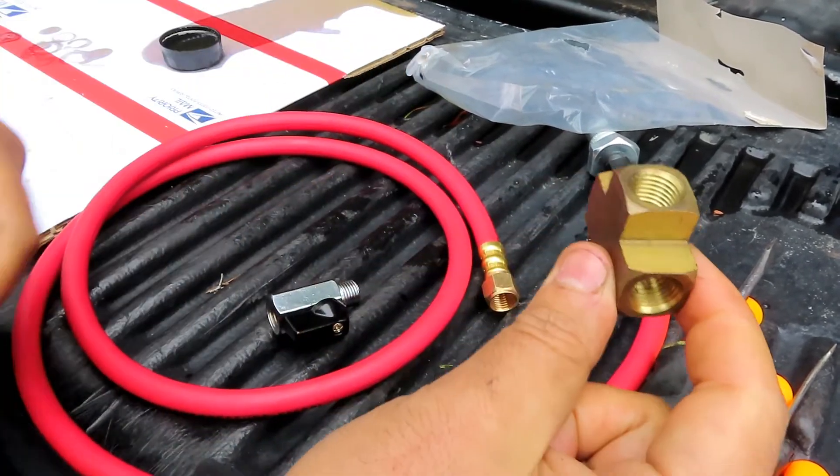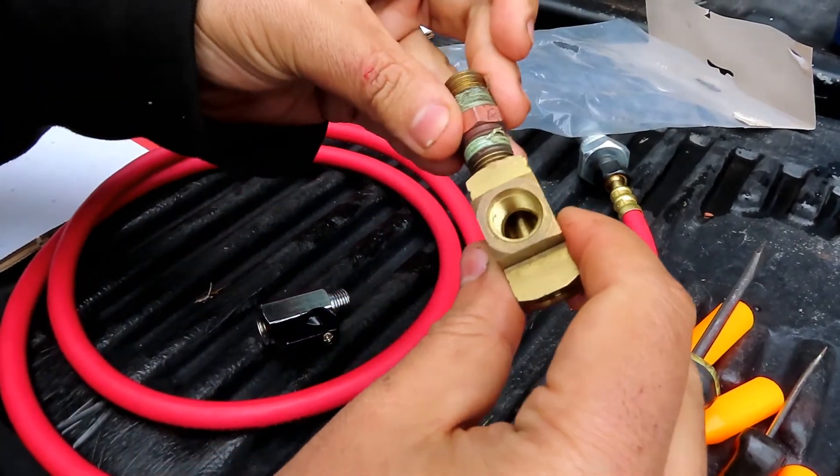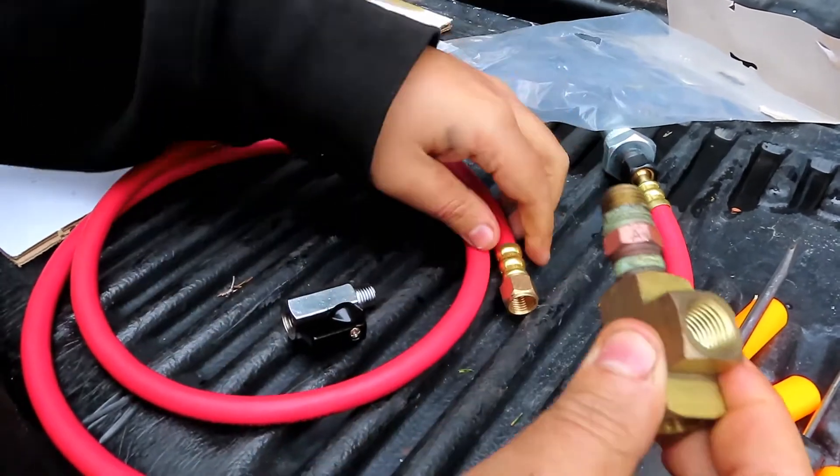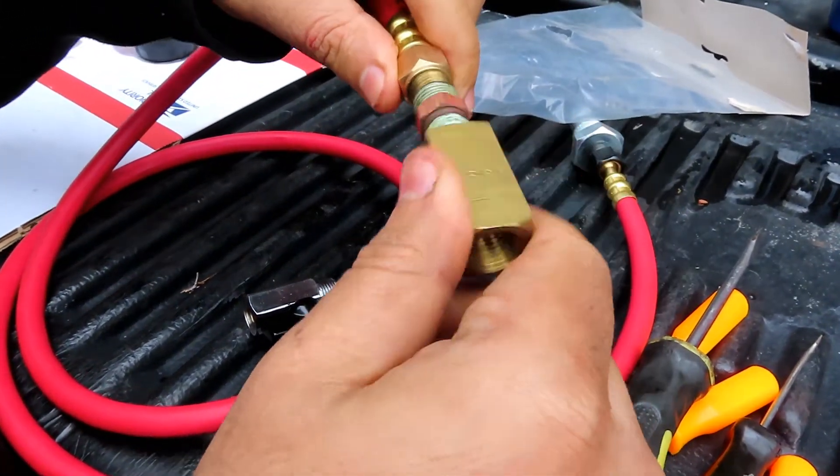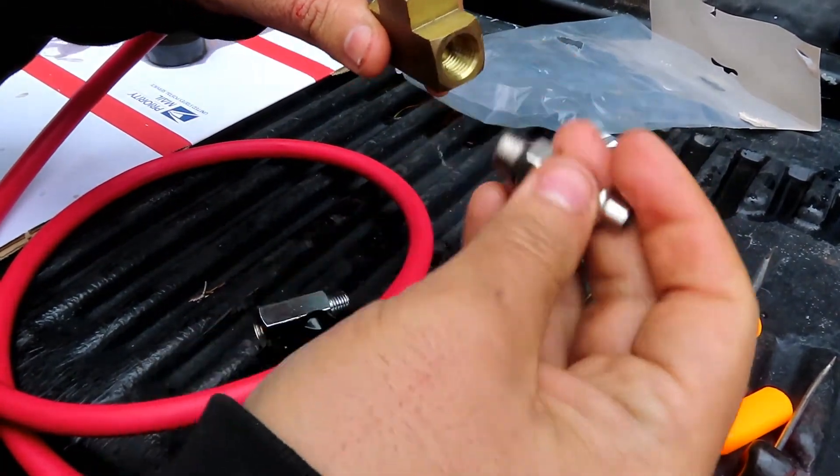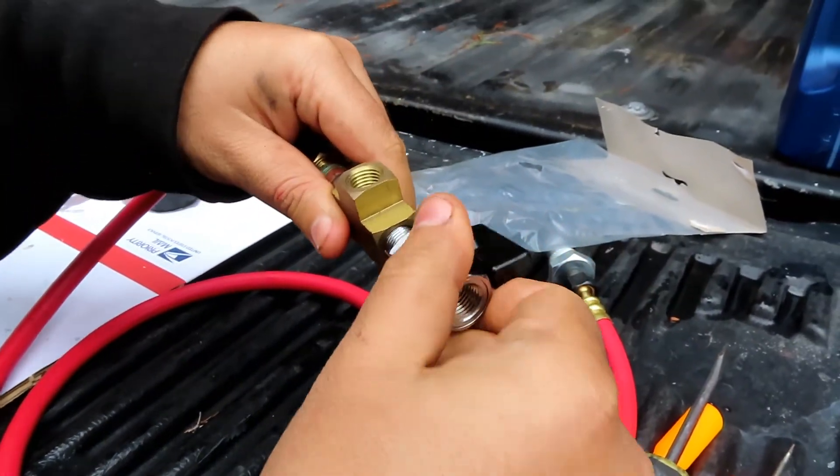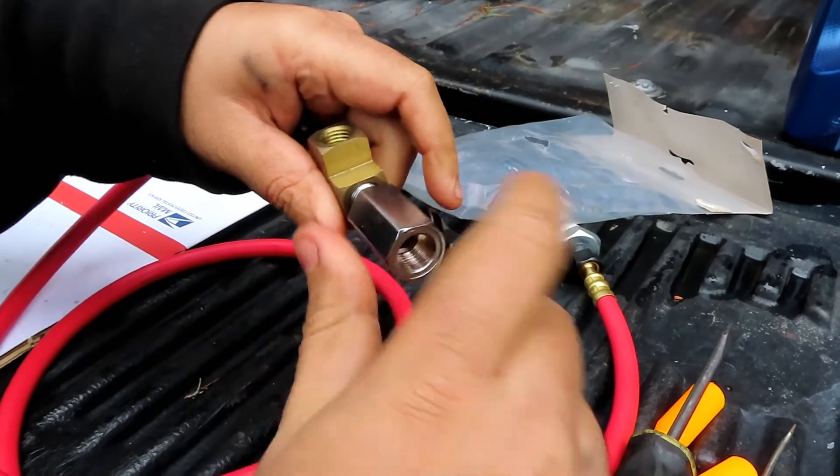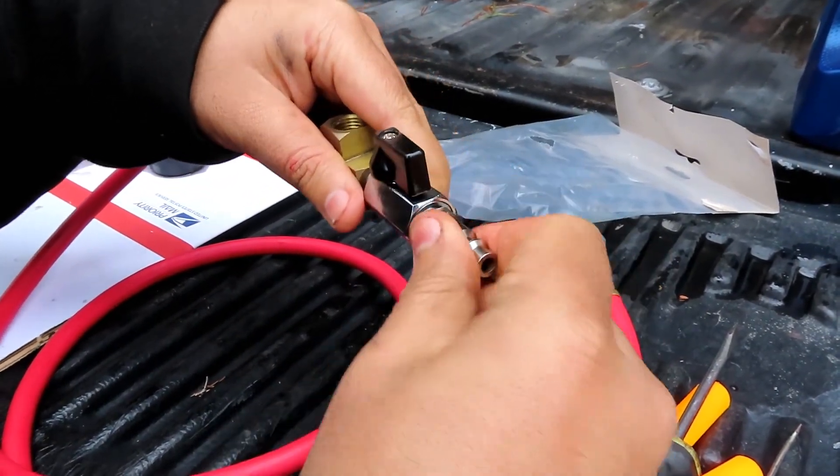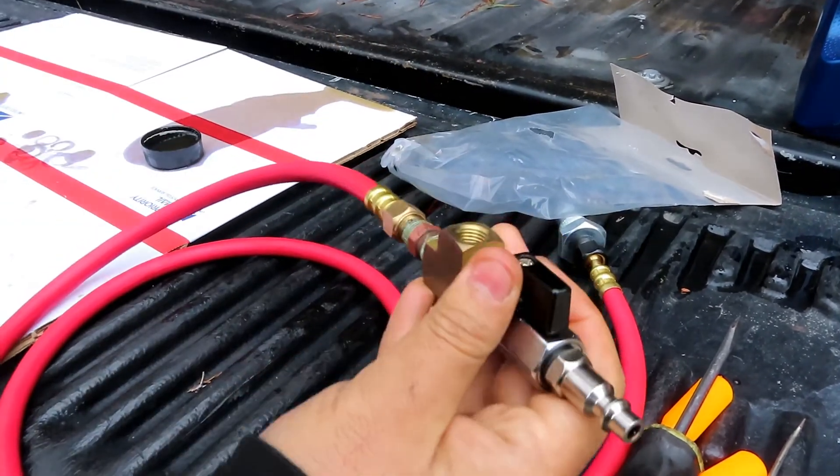So I got a regular quarter-inch NPT T, three female sides. I got a coupler, quarter-inch coupler. Screw that onto my hose. Then your compressor fitting or your ball valve would screw into this side, and then your compressor fitting goes around here.